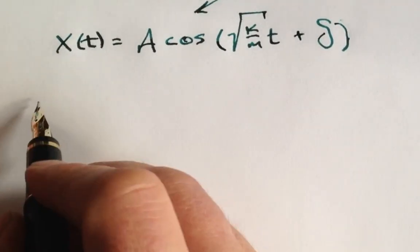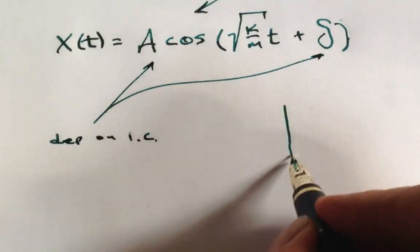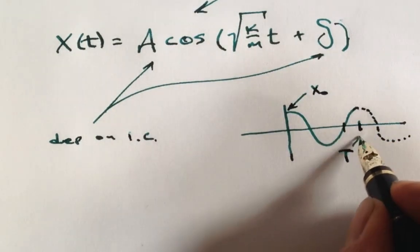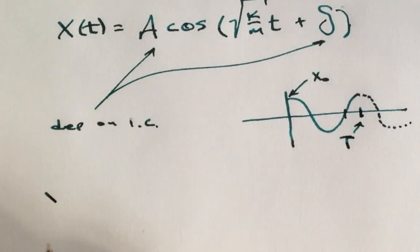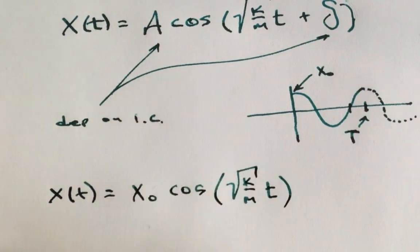So how do we determine those values? Through initial conditions. In this case, we know that the mass was stretched out to some initial displacement x0 and released from rest. So we can write a simple unshifted cosine function with amplitude x0 and it will have those characteristics of zero velocity at time equals zero.